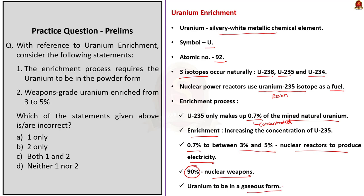The enrichment process requires uranium to be in gaseous form. This can be achieved through a process called conversion, where uranium oxide — a powdered form of mined uranium — is converted into uranium hexafluoride, which is a gas at relatively low temperatures. After this, the uranium hexafluoride is fed into centrifuges that have thousands of rapidly spinning vertical tubes. These centrifuges separate the uranium hexafluoride into two streams: one containing enriched uranium-235 and the other with lower concentration of uranium-235.